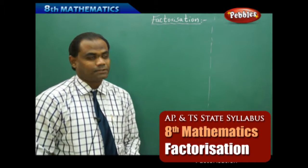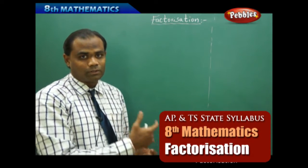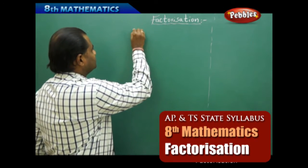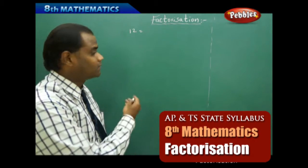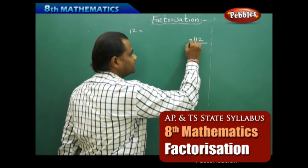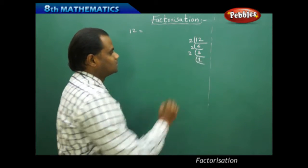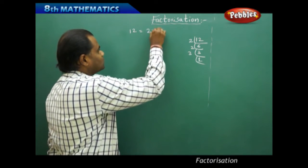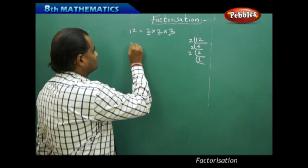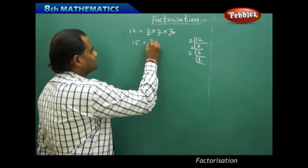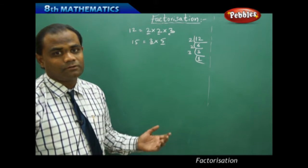Factorization is the process of finding factors. For example, as a recap, the number 12 can be expressed as factors. Using the LCM process, we take the least prime and find the factors step by step: 2, 2, and 3. So the factors of 12 are 2 × 2 × 3. Similarly, 15 can be written as 3 × 5, so the factors of 15 are 3 and 5. Algebraic expressions also have factors found in a similar manner.